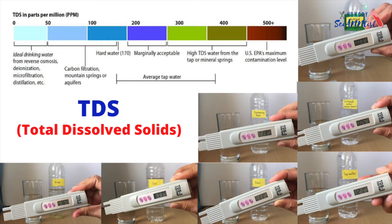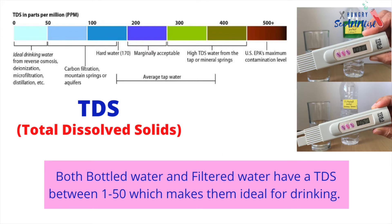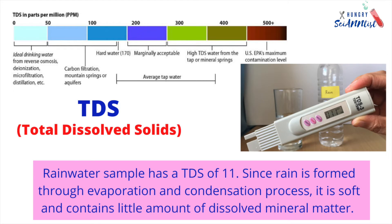Result of the experiment. Bottled water and filtered water have a TDS between 1 to 50, which makes them ideal for drinking. Rain water sample has a TDS of 11. Since rain is formed through evaporation and condensation process, it is soft and contains little amount of dissolved mineral matter.